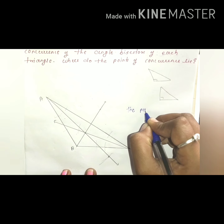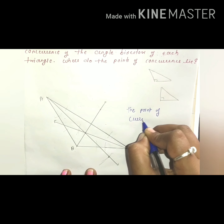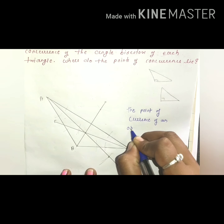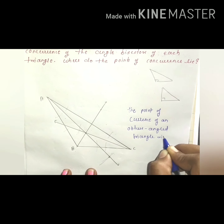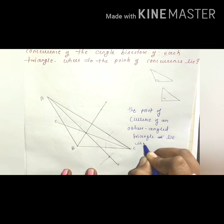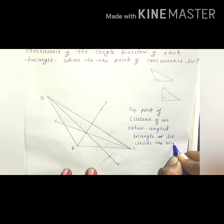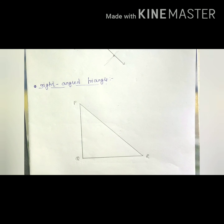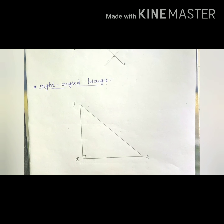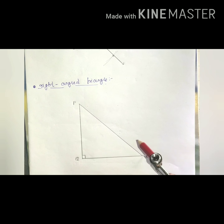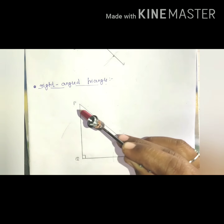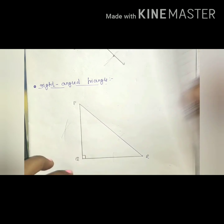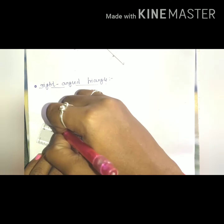Question number 3: Draw an obtuse angle triangle and a right angle triangle, find the point of concurrence of the angle bisectors of each triangle, and determine where the point of concurrence lies. A triangle in which one angle is obtuse is called an obtuse angle triangle. A triangle in which one angle is 90 degrees is called a right angle triangle. First we draw one obtuse angle triangle to verify where the point of concurrence lies.